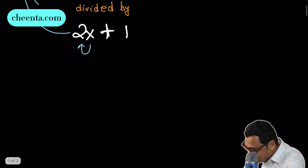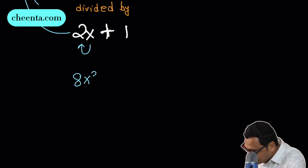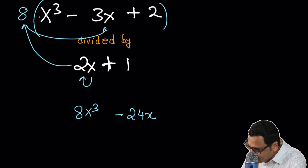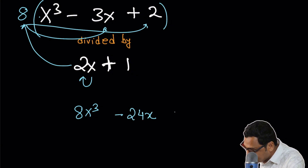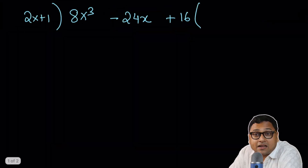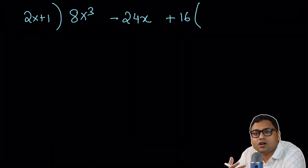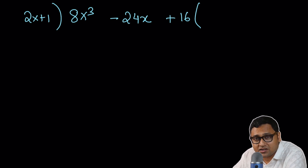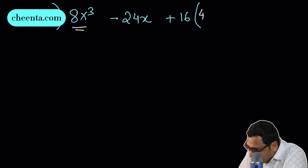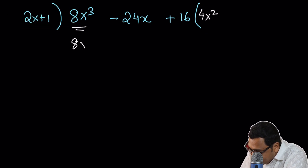Let's now work on the main problem. We have 8x³ - 24x + 16 divided by 2x + 1. I will do a normal long division. To get the 8x³ term, I need to multiply by 4x², giving 8x³ + 4x².